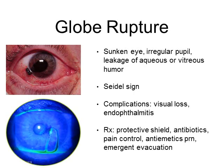In the next few slides, we will discuss common traumatic eye conditions that can be encountered in the wilderness. Globe rupture is a dangerous condition that you should not miss. Sometimes it can be very obvious, and sometimes it's occult, so a careful exam is important.